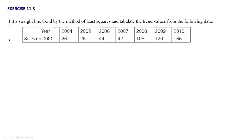The exercise says to fit a straight line trend by the method of least squares and tabulate the trend values from the following data. We have to find the straight line trend by the method of least squares and also tabulate the trend values for each of these years. In the first question, for various years, the sales in 1000 rupees is given.